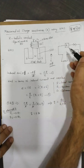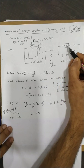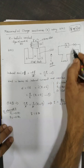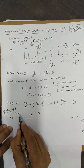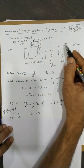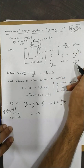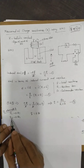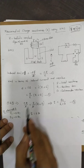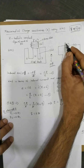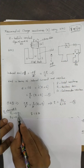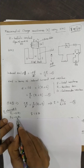We perform two trials. In the first trial, the resistance box is set to R1, and we observe a first throw θ1. In the second trial, the resistance box is set to a larger value R2, and we observe a corresponding deflection θ2.